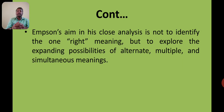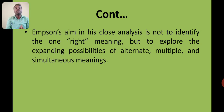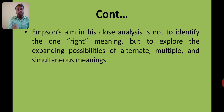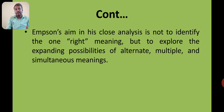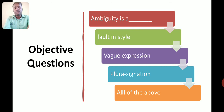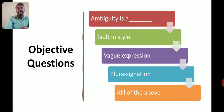Empson's aim in his close analysis is not to identify the one right meaning, but to explore the expanding possibilities of alternate, multiple, and simultaneous meanings. He is interested in finding different meanings rather than one meaning — alternate, multiple, and simultaneous meanings that exist in poetry. This was all about the meaning and definitions of ambiguity according to Empson's views. We will discuss those seven types in particular in our next session.